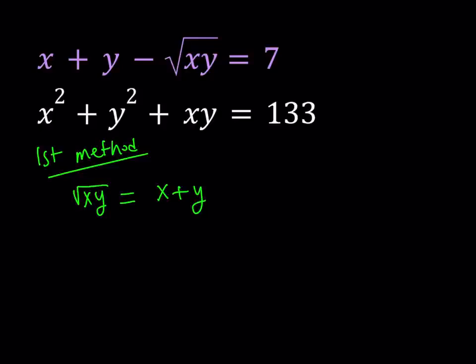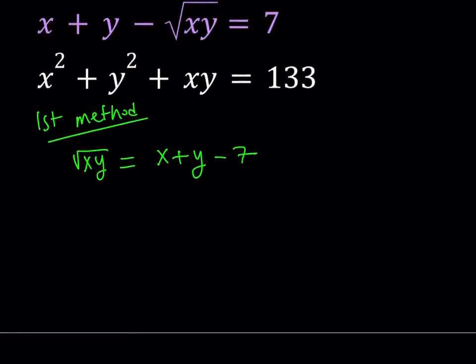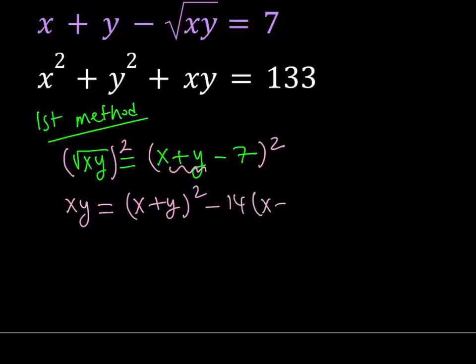If I go out and add it to both sides and subtract 7, I get the following. And then I'll be squaring both sides. When I square both sides, I'm getting xy equals, now I can just consider this as a single quantity and write this as x plus y squared minus 14 times x plus y plus 49.